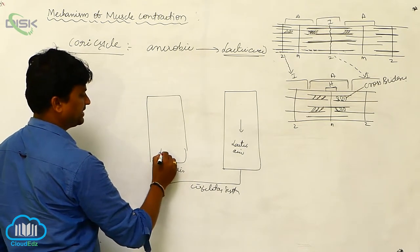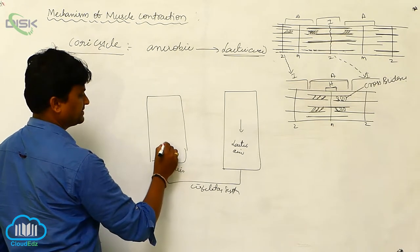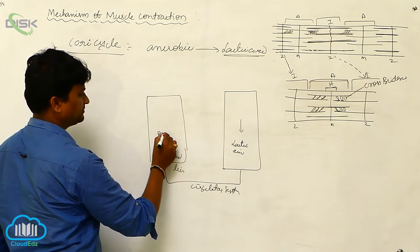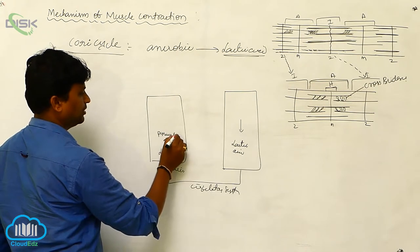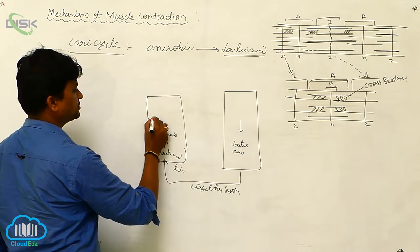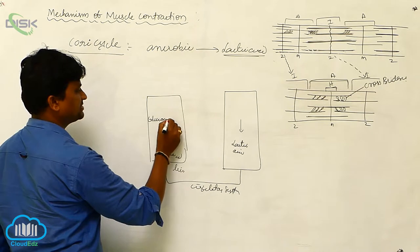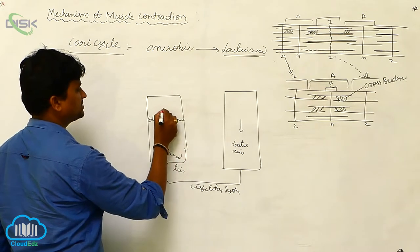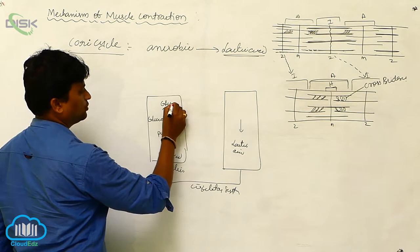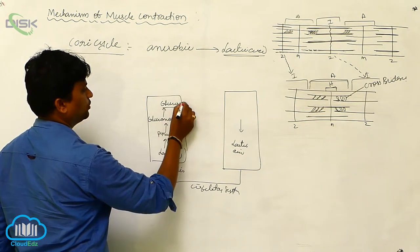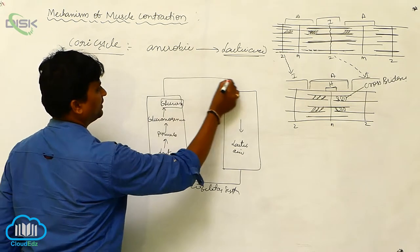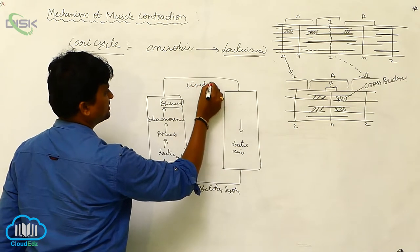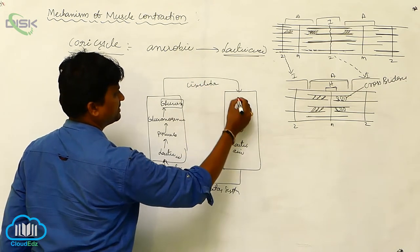Through the circulatory system, the lactic acid reaches the liver. In the liver, lactic acid is converted to pyruvate. Pyruvate undergoes the gluconeogenesis process, which results in the formation of glucose. The glucose then again travels through the circulatory system and reaches back to the muscle.